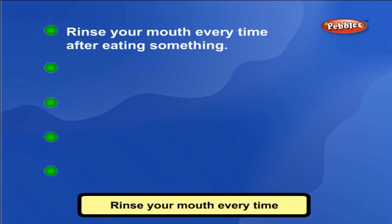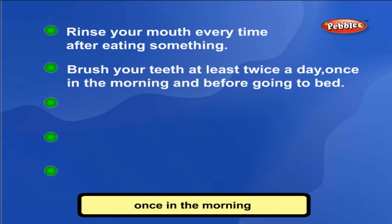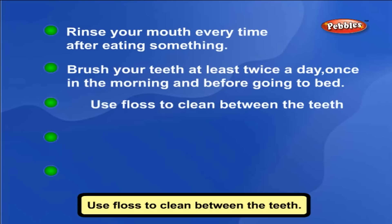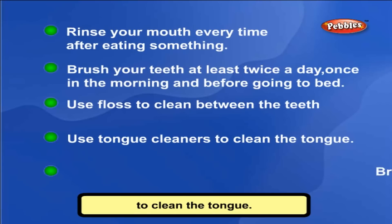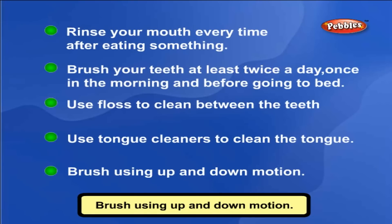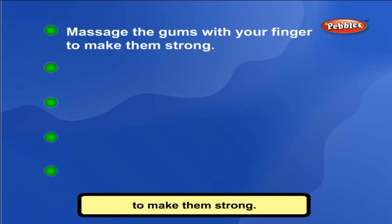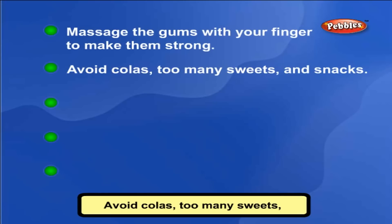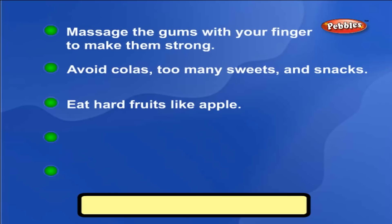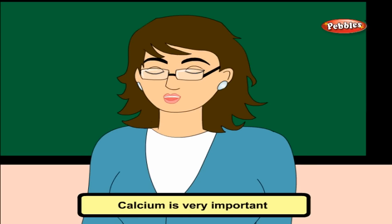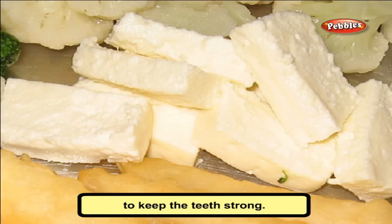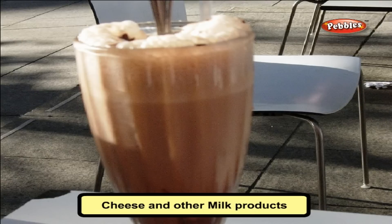Ways to protect your teeth: Rinse your mouth every time after eating something. Brush your teeth at least twice a day, once in the morning and before going to bed. Use floss to clean between the teeth. Use a tongue cleaner to clean the tongue. Brush using up and down motion. Massage the gums with your finger to make them strong. Avoid colas, too many sweets and snacks. Eat hard fruits like apple. Visit the dentist regularly for checkups. Do not use others' toothbrush. Calcium is very important to keep the teeth strong. Paneer, cheese and other milk products are rich in calcium.